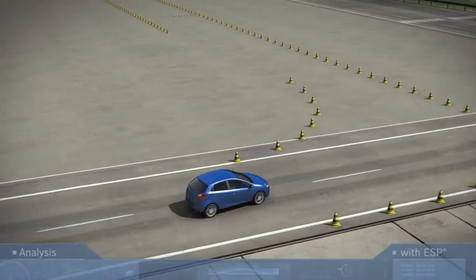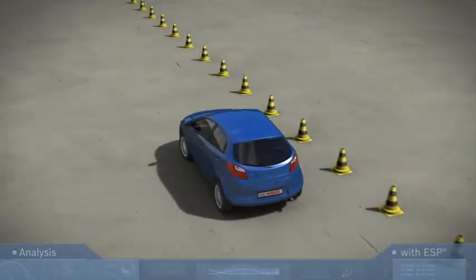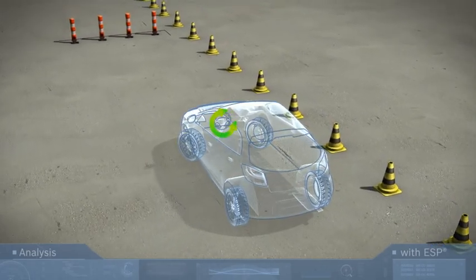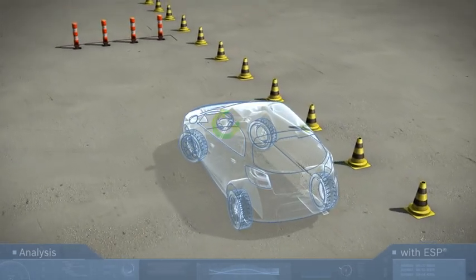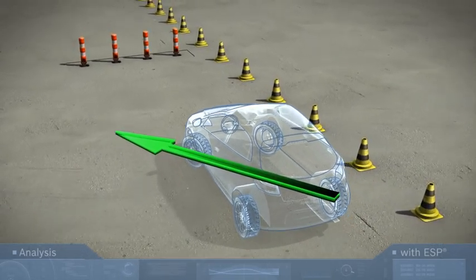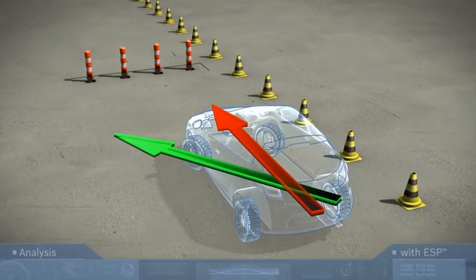What happens during the first steering maneuver? The driver suddenly has to swerve to the left. The steering angle sensor transmits this to the ESP control unit. But the yaw rate sensor signals that the vehicle is understeering, heading straight towards the obstacle.